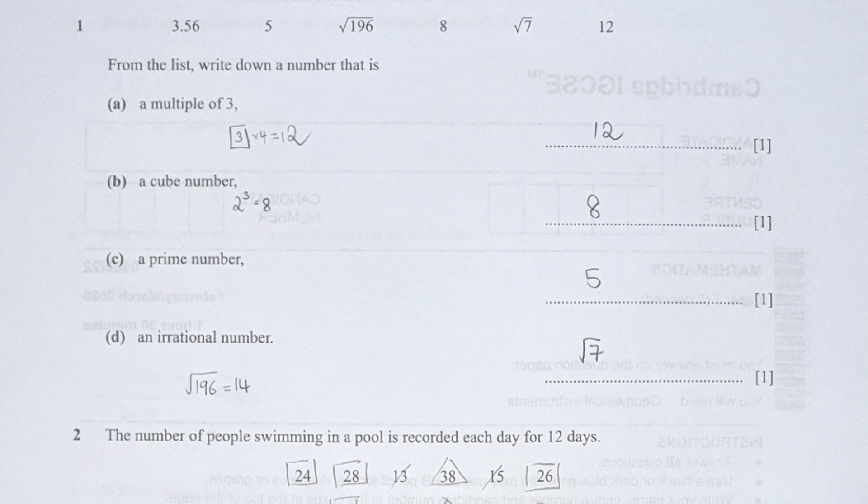For prime numbers, only 5 qualifies because it can be divided by itself and 1 only. For irrational numbers, I'm putting square root of 7 because square root 196 can be written as 14 and 3.56 can be written as a fraction.